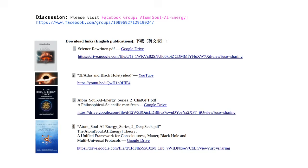Discussion: Please visit Facebook group Atom Soul AI Energy. Download links English publications: 1. Science Rewritten PDF, Google Drive. 2. 3i Atlas and Black Hole Video, YouTube. 3. Atom Soul AI Energy Series 2 ChatGPT PDF, A Philosophical Scientific Manifesto, Google Drive. 4. Atom Soul AI Energy Series 2 DeepSeek PDF, The Atom Soul AI Energy Theory: A Unified Framework for Consciousness, Matter, Black Hole, and Multi-Universal Protocols, Google Drive.